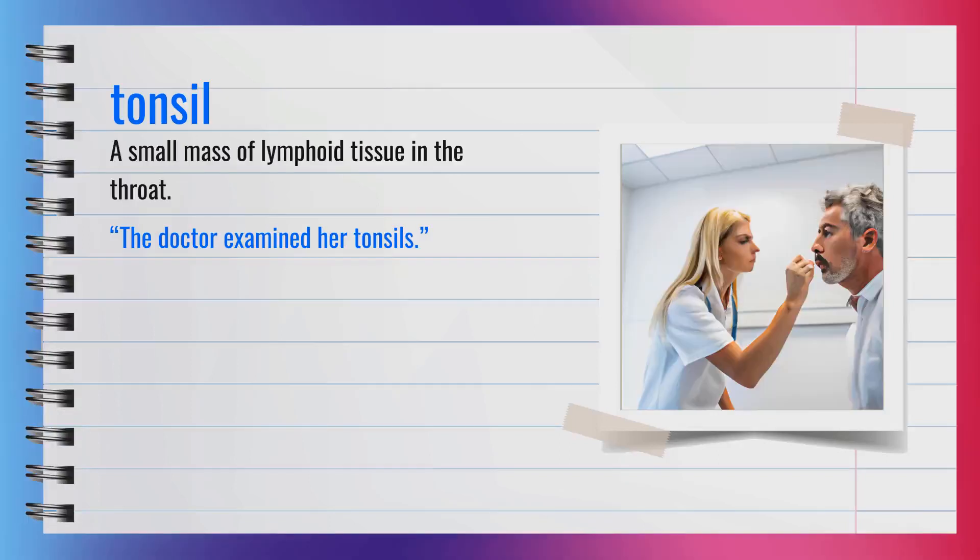The word tonsil, spelled T-O-N-S-I-L, is a noun. A tonsil is a small mass of lymphoid tissue located in the throat. Synonyms include adenoid. For example, the doctor examined her tonsils. In summary, a tonsil is a small mass of tissue in the throat.